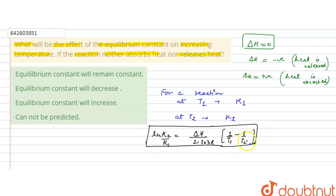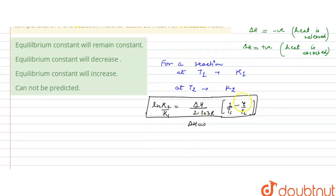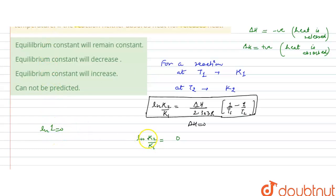Now for this reaction, ΔH is 0, that is the reaction neither absorbs nor releases heat. So if ΔH is 0, then this whole term will be 0. It means ln(K2/K1) will be 0, because ΔH is 0 and the whole term becomes 0. And ln is 0 when ln(1) = 0, which means K2/K1 equals 1.